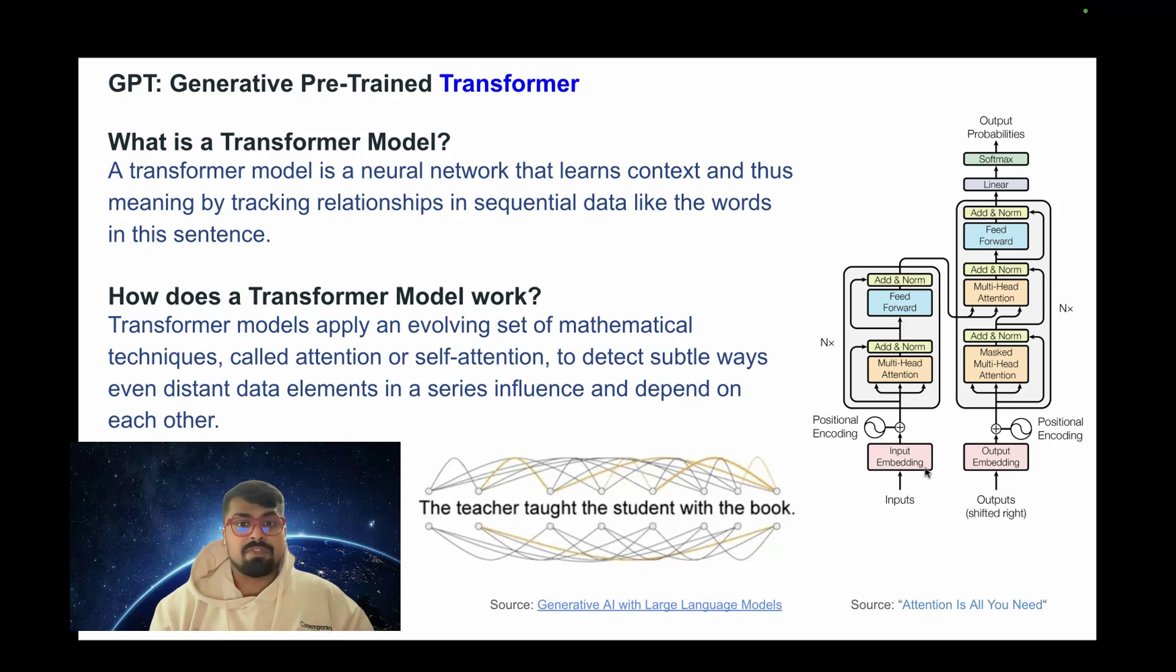So how does a transformer model work? Transformer models apply an evolving set of mathematical techniques called attention or self-attention to detect subtle ways even distant data elements in a series influence and depend on each other.